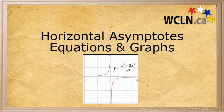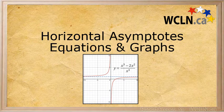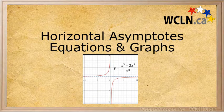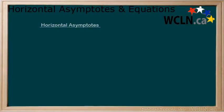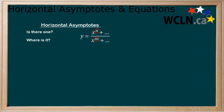In this tutorial, you will be learning about horizontal asymptotes of rational functions with respect to equations and graphs. When looking at rational equations, you can determine if there is a horizontal asymptote and, if there is, its location by comparing the coefficients of the largest power in the numerator and denominator. There are three cases we will consider.